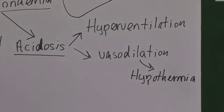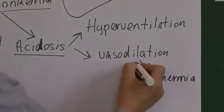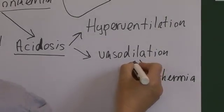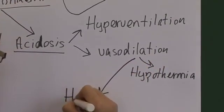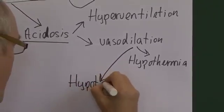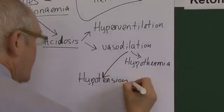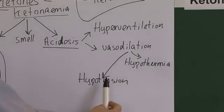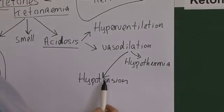But as well as that, if there's a vasodilation, then I think you can see that that's going to lower peripheral resistance, and that can lead to low blood pressure. So the vasodilation can lead to hypotension.